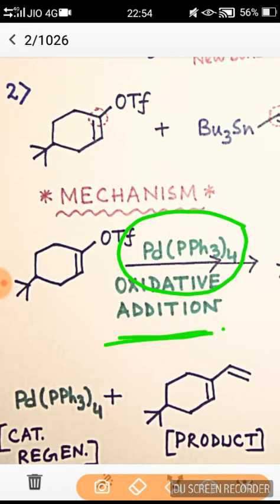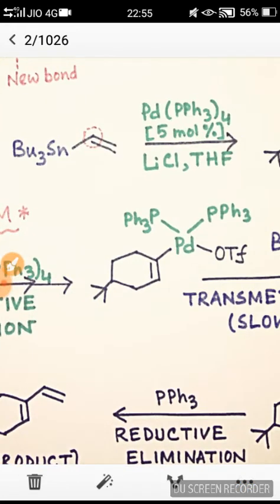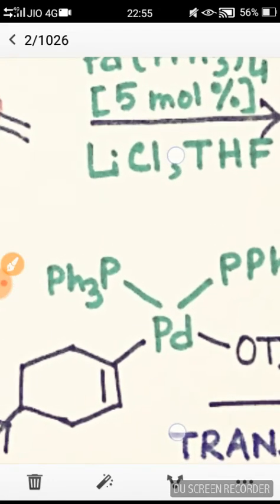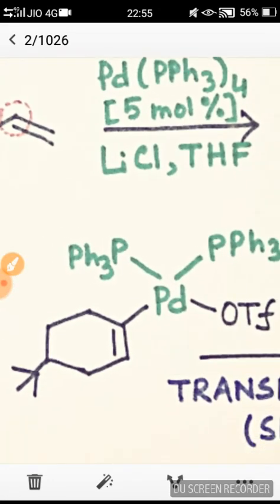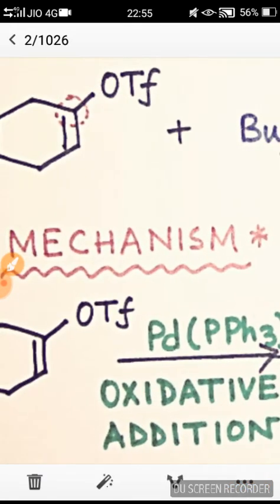This palladium(0) compound undergoes oxidative addition. That is, in an addition reaction where the oxidation state of the palladium is here 0, it will be oxidized to plus 2 state. This palladium is now in plus 2 state, whereas this palladium was in 0 oxidation state.